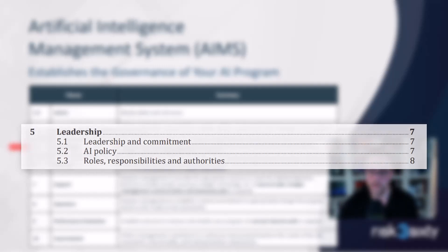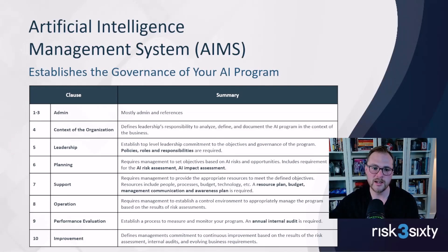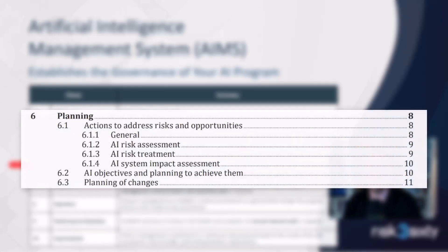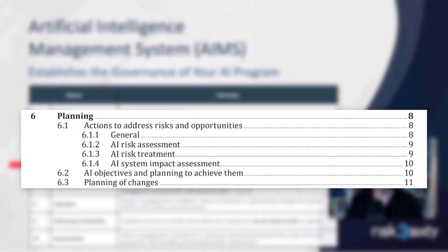Clause six is planning. ISO encourages you to think about your risk — do you know your unique risks for your AI management system? Your risk is very different if you're developing and selling an AI product versus integrating with OpenAI, or if you're automating loan decisions versus building a customer support chatbot. You need to document risks, plan how to treat them, and develop a strategy unique to your organization.